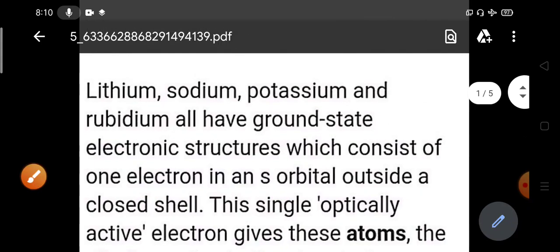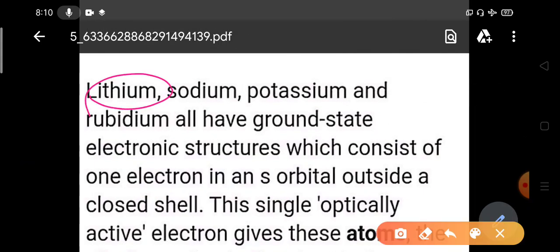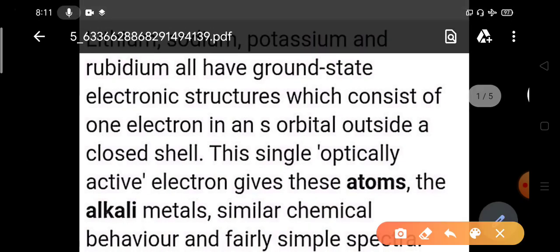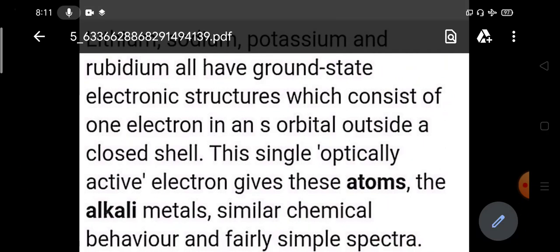What do we mean by that? Suppose I am taking the lithium atom. It has atomic number three, so Z is three. I have to write the electronic configuration as 1S2 2S1. This is a closed shell and the outermost shell is consisting of one electron which is in the S orbital. That is one electron in an S orbital outside a closed shell.